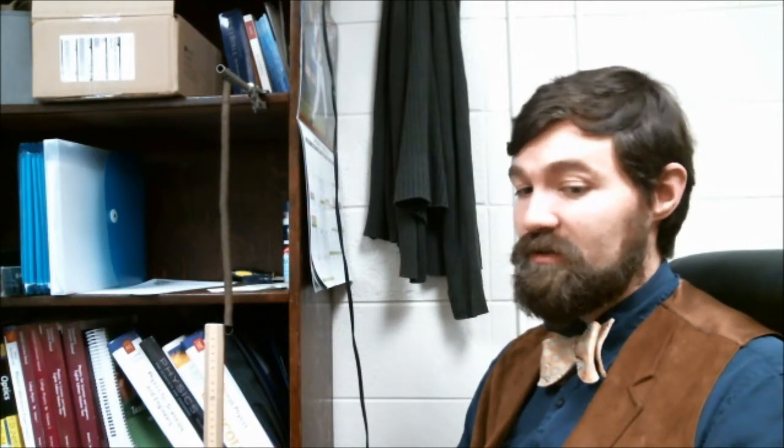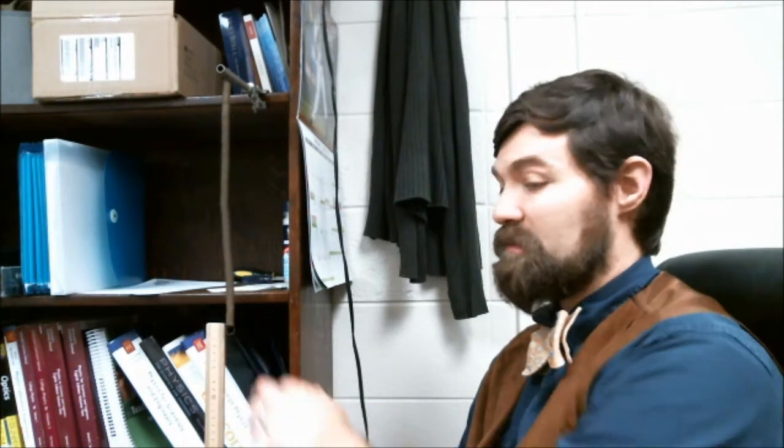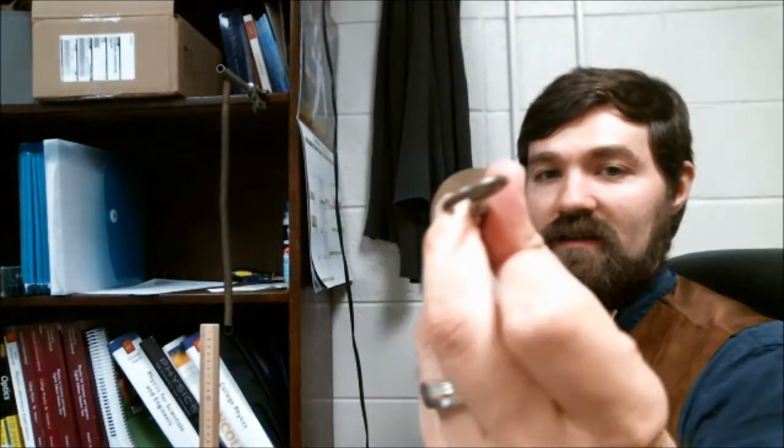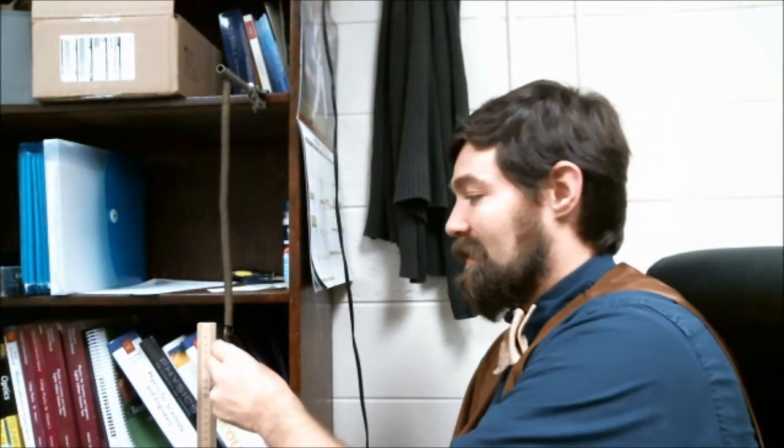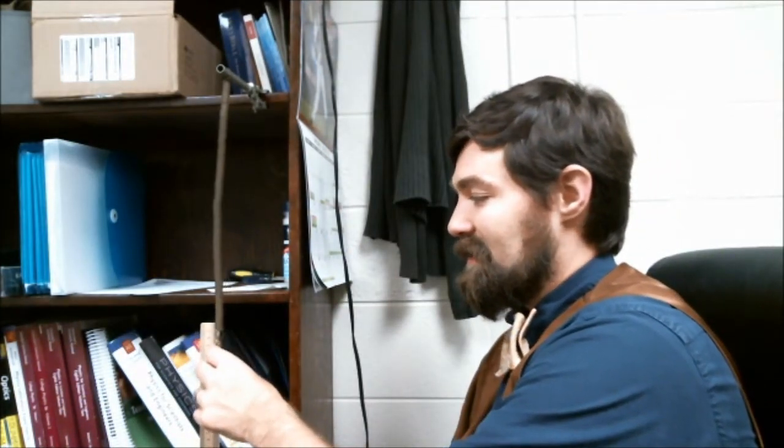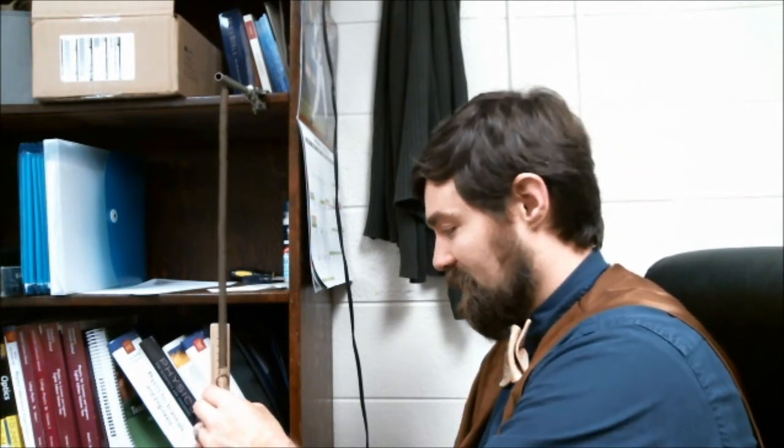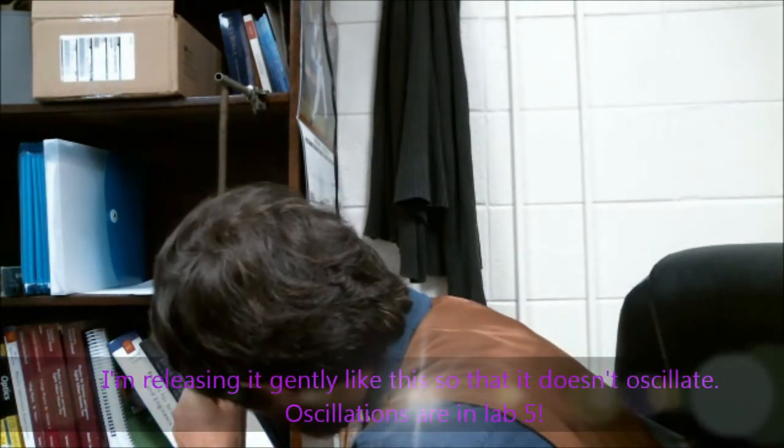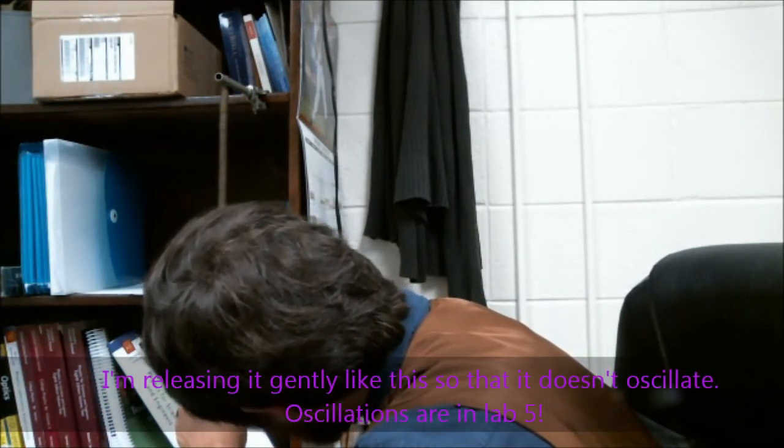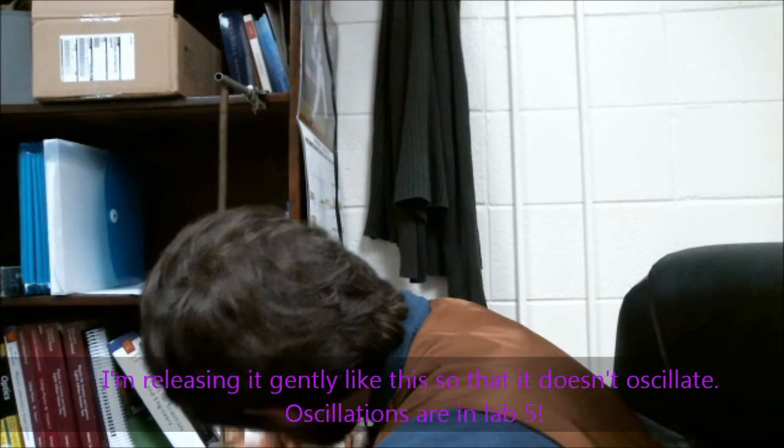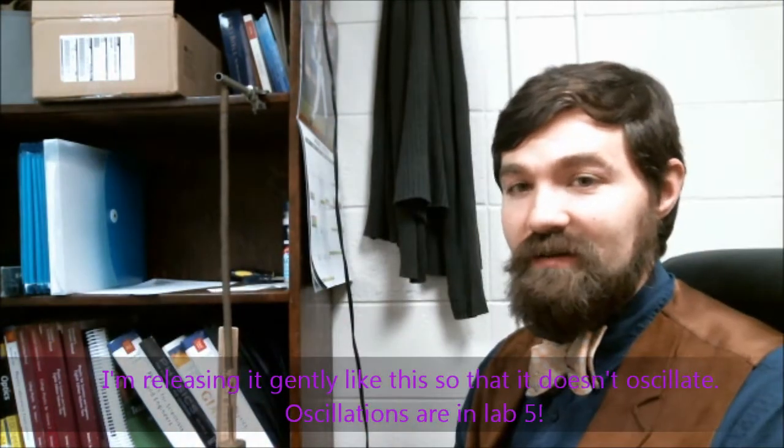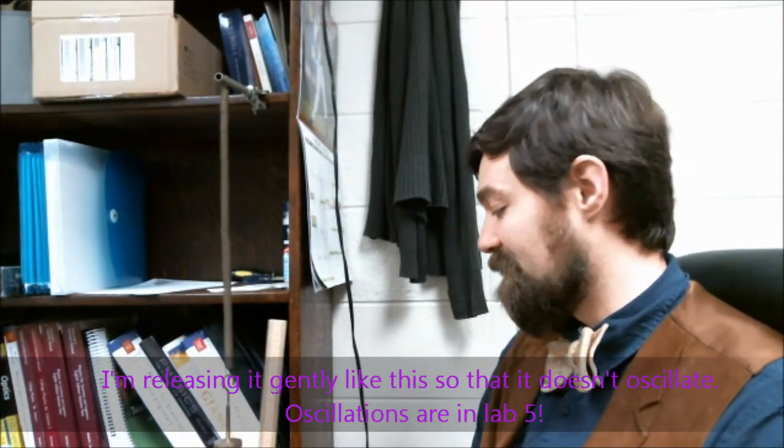What I'm going to do is find out how much does the spring stretch by each time that I add mass to it. This mass hanger is 100 grams. I hook the mass hanger onto the spring, I release it, and then I look and see where the bottom of this spring is at. According to this it's at 5.3 centimeters. So I've stretched the spring by 5.3 centimeters by adding 100 grams.